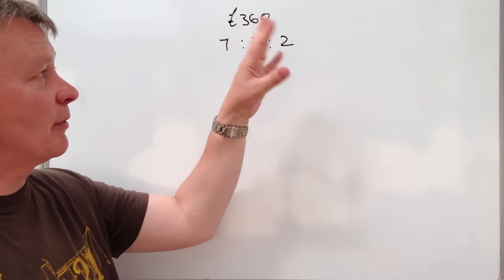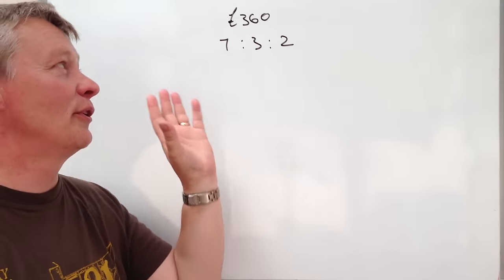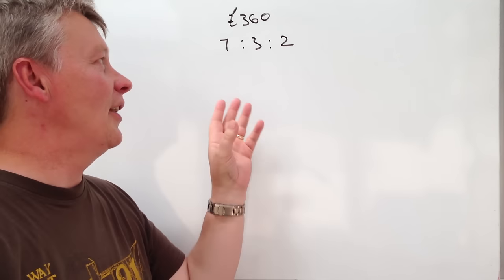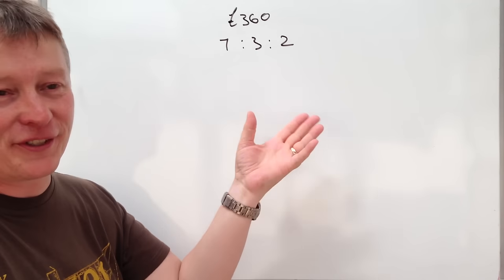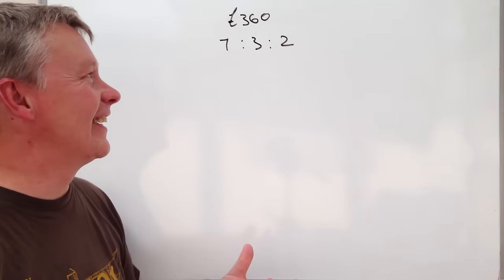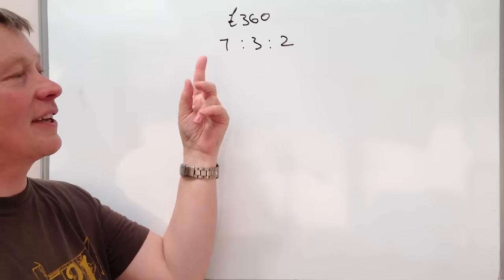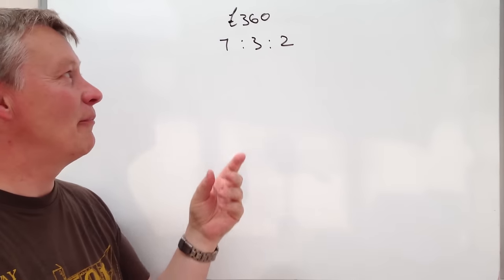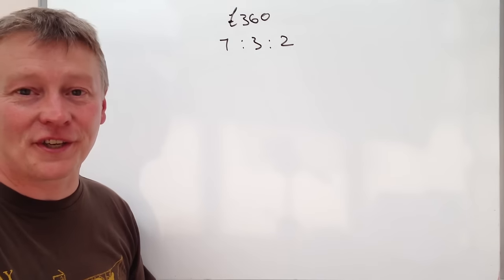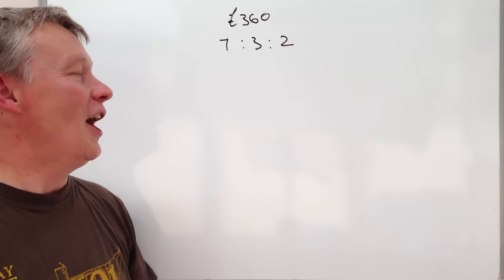So somebody's won an amount of money on the lottery, they've won £360 and they're going to share it in the ratio of 7 to 3 to 2. And the question wants us to calculate how much the person who gets 7 shares, how much of the pot of £360 they actually get.